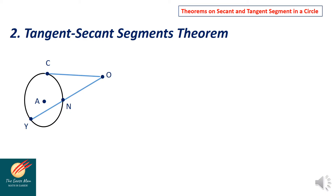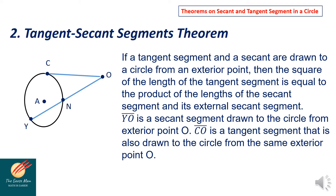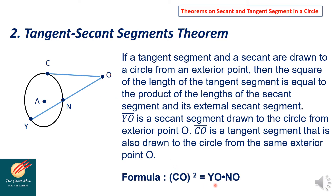The second theorem we will discuss is the tangent-secant segment theorem. If a tangent segment and a secant are drawn to a circle from an exterior point, then the square of the length of the tangent segment equals the product of the length of the secant segment and its external secant segment. So if CO is the tangent segment and YO is the secant segment, the formula is: CO squared equals YO times NO.